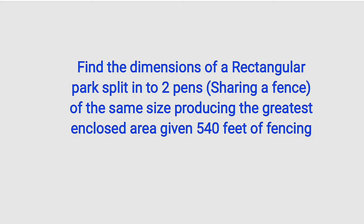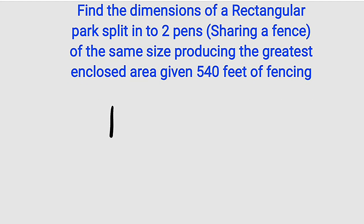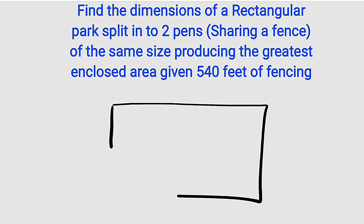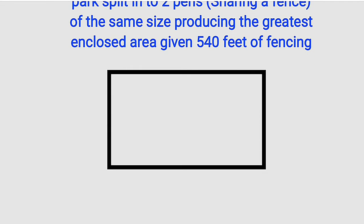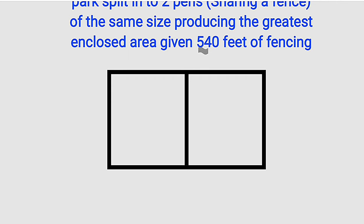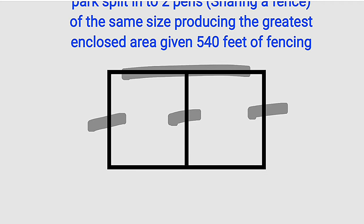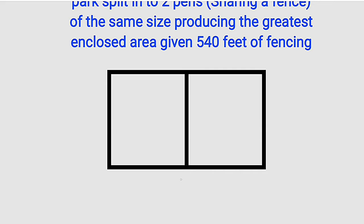Alright, first of all let us sketch the rectangular pens. Suppose this is the rectangular pens. We want to split it into two, such that the area here will be exactly the same as the area here. We are given from the question that 540 feet is the total length of fencing all around, including this leg and these other legs. So the dimension: this will be the length, this will be the width — and this will also be the width because they are exactly the same — and we have l here as well.